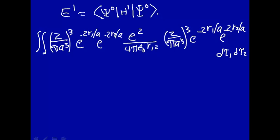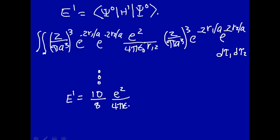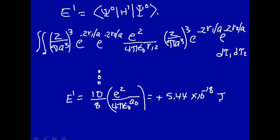The constants come out, but the problem is that r₁₂ couples r1 and r2, making the integral complex. You can solve it — it's pretty complex, you can probably look it up — but without going through all of that, the first-order correction to the energy works out to (10/8) × e²/(4πε₀a₀), which comes out to be a positive number: 5.44×10⁻¹⁸ J. That's the first-order correction to the energy of the helium atom.